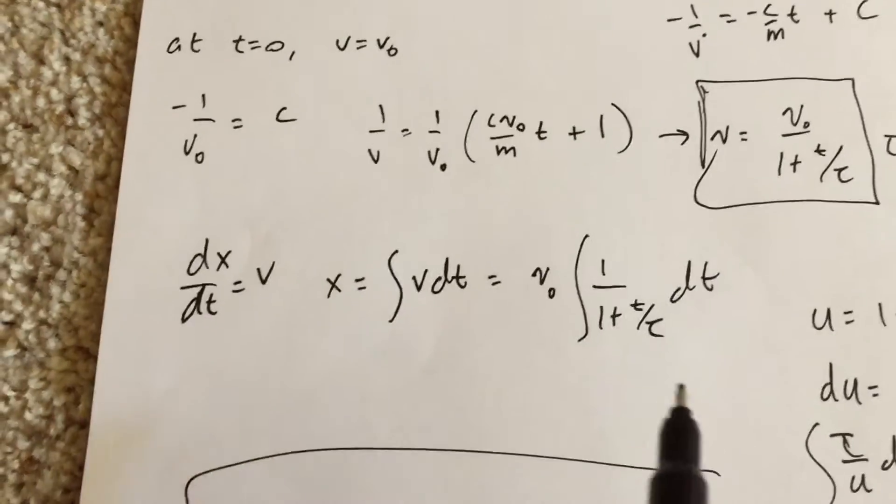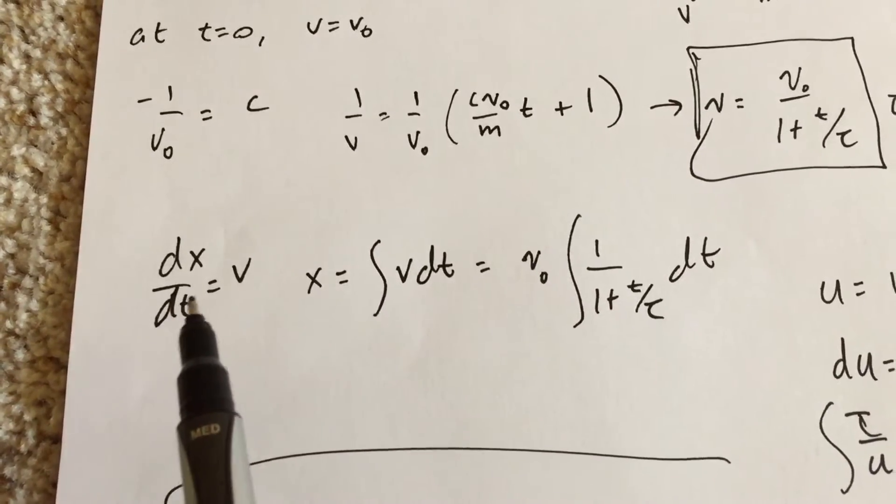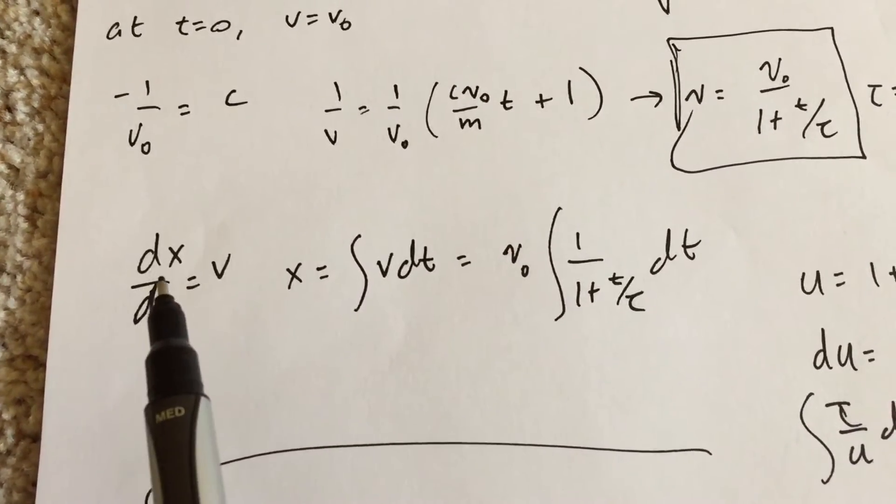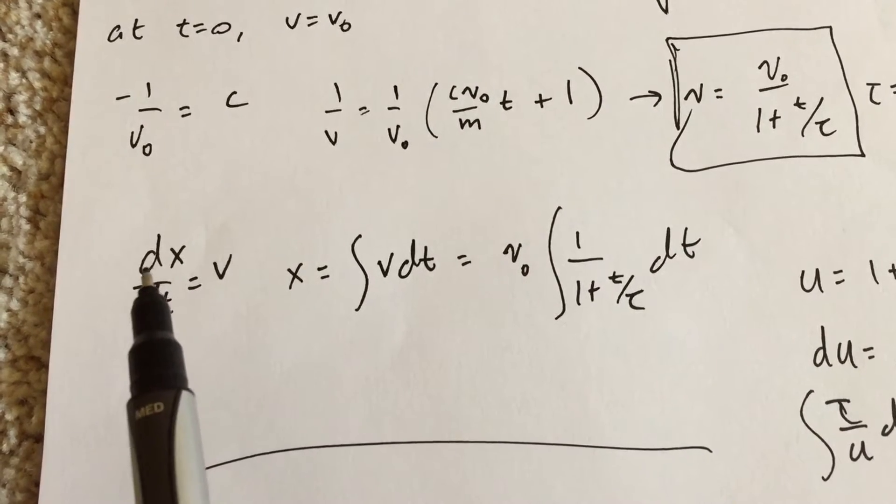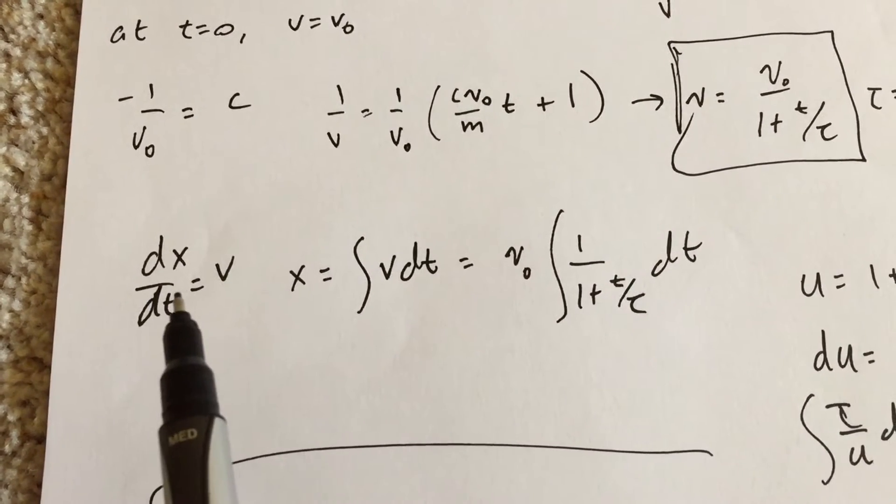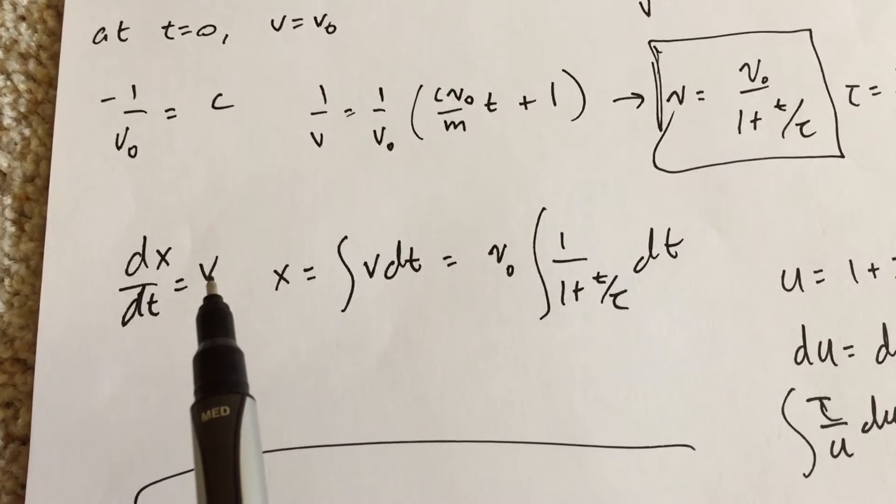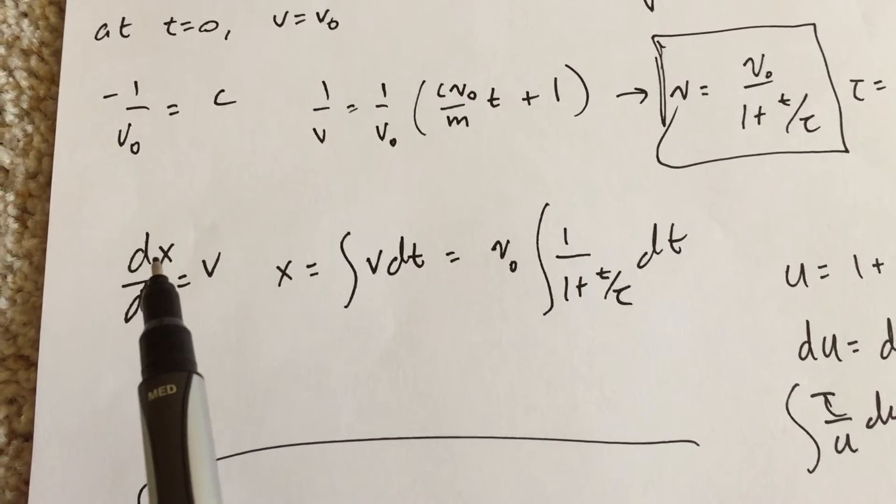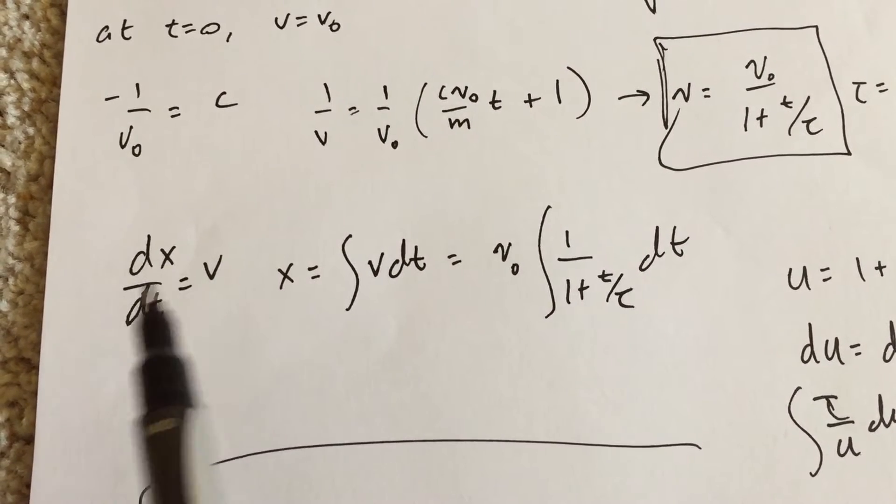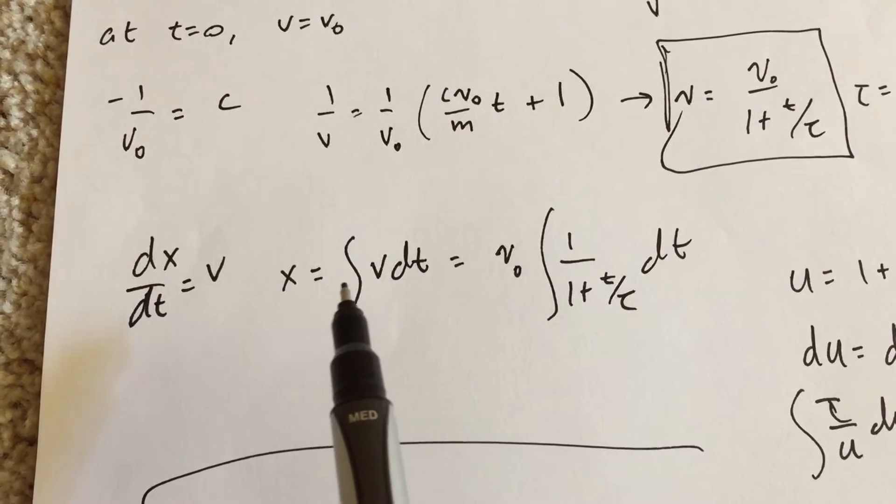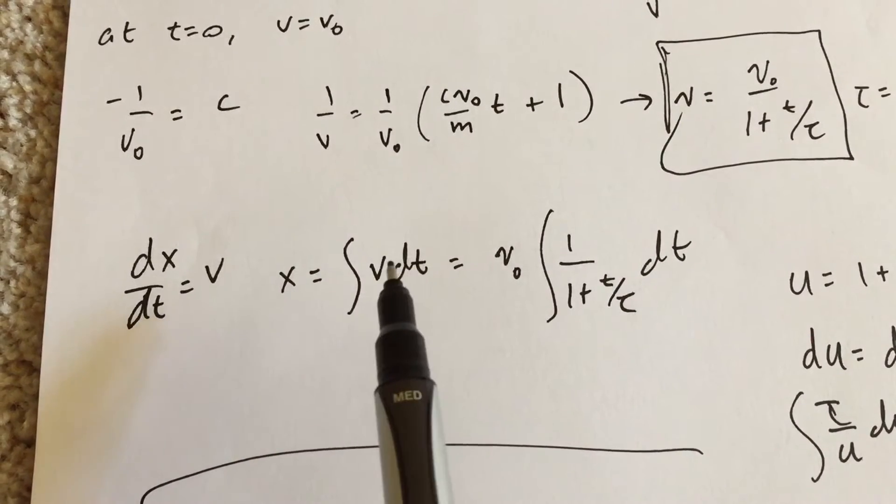Okay, so here's the derivative, the velocity is the derivative of the position with respect to time. So again, I can just integrate both sides with respect to, this side I'd integrate with respect to dx, and this is with t, so it's going to be the integral of v dt.